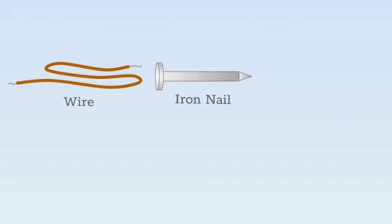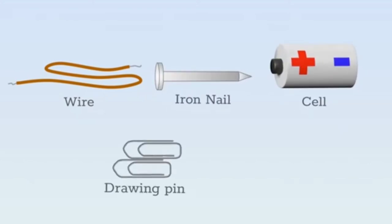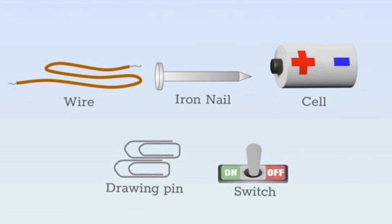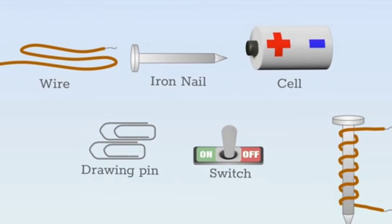Take an insulated wire of around 80 cm, an iron nail, a cell, some drawing pins, and a switch. First wind the insulated wire around the iron nail tightly. This forms a coil.